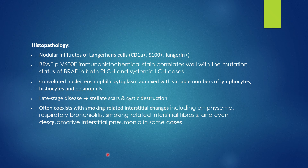Pathologically, there are cellular nodules of Langerhans cells, which are positive for CD1a, S100, and Langerin. These cells have convoluted nuclei and eosinophilic cytoplasm, mixed with a variable number of lymphocytes, histiocytes, and eosinophils. BRAF V600E immunohistochemical stain correlates with the mutation status of BRAF in both pulmonary and systemic Langerhans cell histiocytosis. Initial lesions have a predominance of peribronchiolar or centrilobular location.